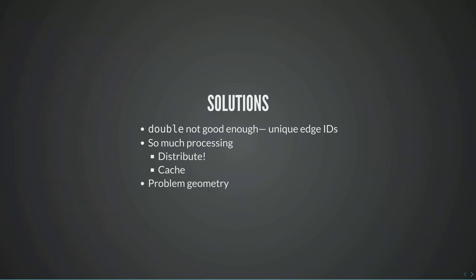There were still a few cases where the algorithm didn't work, usually because of broken source artwork. It was left to the artist to fix up the geometry to get the level converting correctly — removing coincident triangles, welding nearly identical vertices, and fixing non-manifold edges.